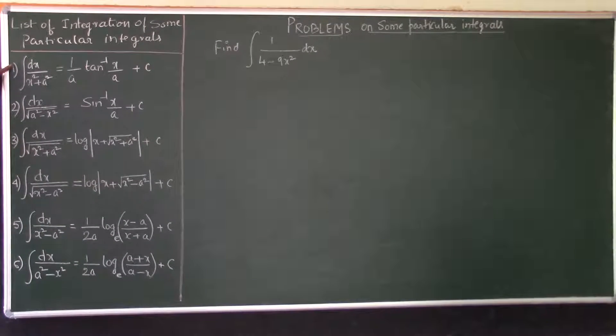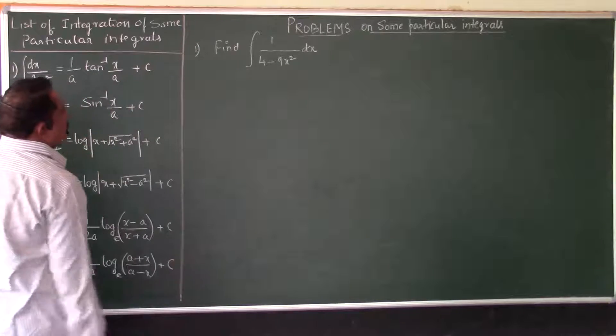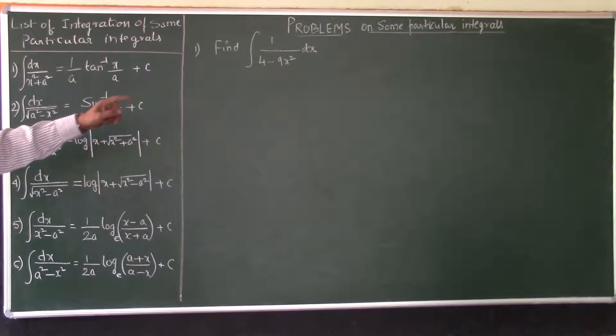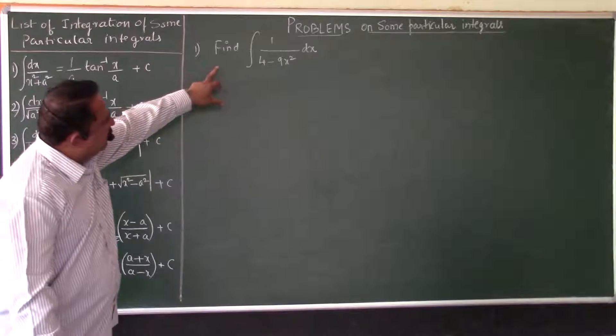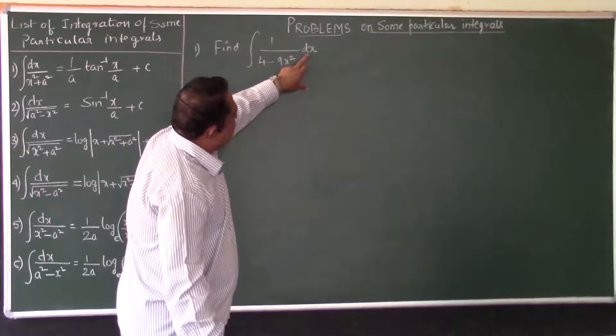Now let us illustrate all these formulas by means of a few problems. The first problem on some particular integrals is: find integral 1 by 4 minus 9x square dx.